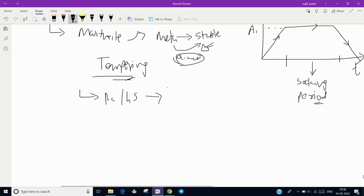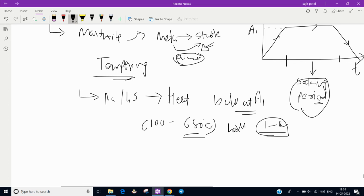In tempering, the hardened steel or martensite is heated to a temperature just below A1 temperature, which is the lower recrystallization temperature, around 100 to 680 degrees Celsius. We hold that component for around one to two hours at that temperature - that is called the soaking period - and then cool back to room temperature.